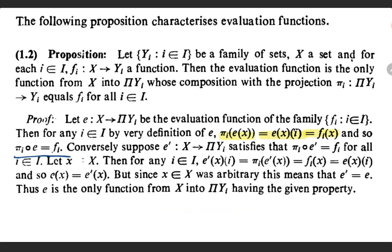Conversely, suppose that e' from x to product yi satisfies the same property, that is pi_i composition e' is equal to fi for all i element of I. We need to show that the evaluation function is the only function with this property. So we will show that e' is in fact equal to e itself. Let us consider an arbitrary point x from capital X. Then for any i element of capital I, e'(x)(i) is equal to pi_i of e'(x), which is equal to fi(x) using the property of e'. That is, pi_i composition e' was assumed to be fi, and using the definition of e, this is equal to e(x)(i). So e(x) is in fact equal to e'(x).